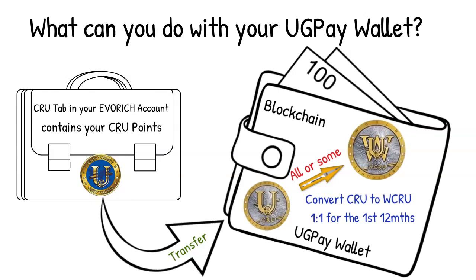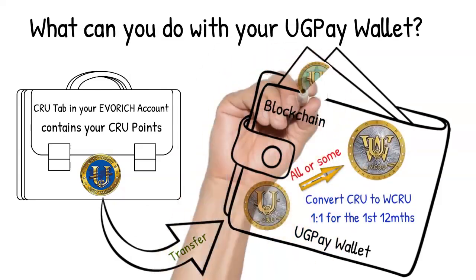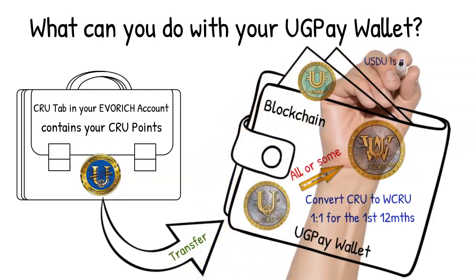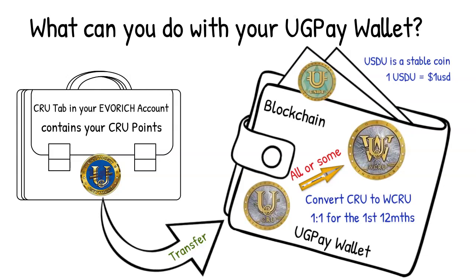After this 12-month period, the 1-to-1 ratio will cease. The CRU and the WCRU price will be independent of each other and determined by the market. Your UGPay wallet also contains USDU, which is the blockchain's stablecoin. One USDU is equivalent to one US dollar, and being a stablecoin, this ratio is ongoing. Your bonuses and your dividends from WCRU will be paid in USDU into your UGPay wallet.